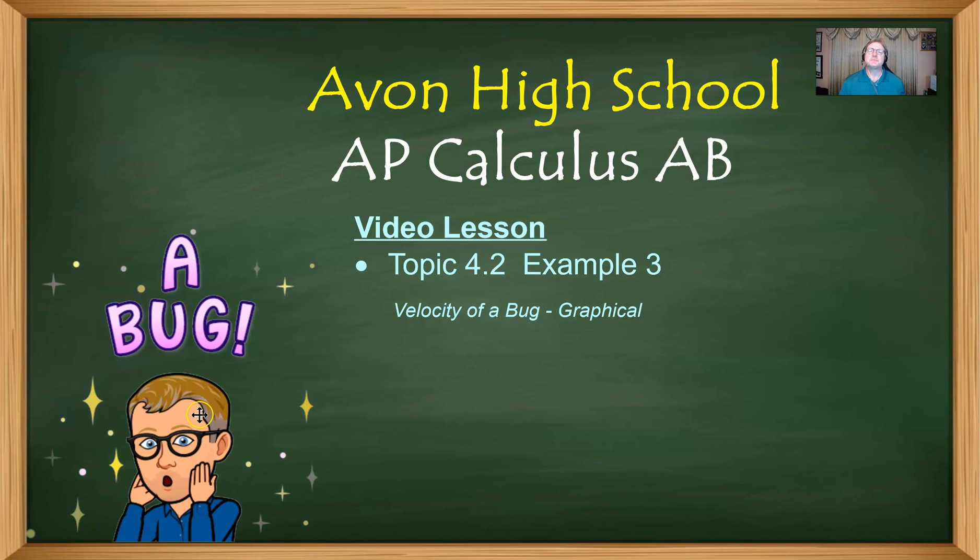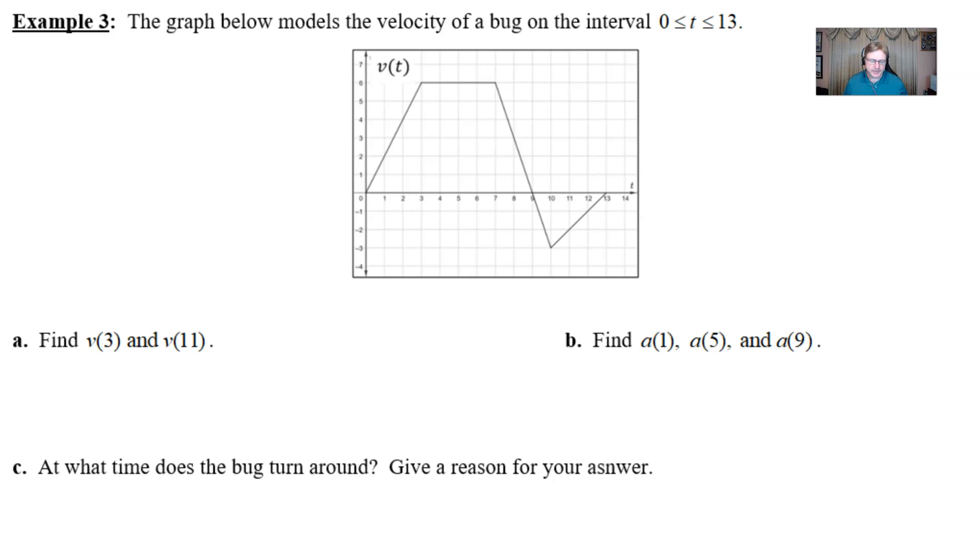Hello AP Calculus AB students, Mr. Record here from Avon High School. We're looking at video number three from our topic 4.2, which is all about particle motion and connecting position, velocity, and acceleration. In this particular example, we've got a different depiction of this motion involving a bug of all things, and we're given a graph of this bug's velocity.